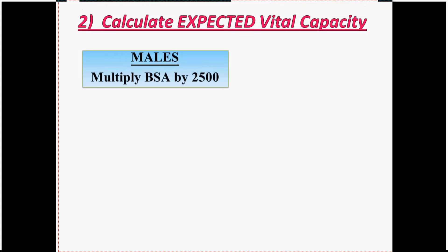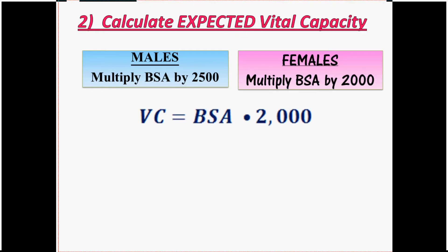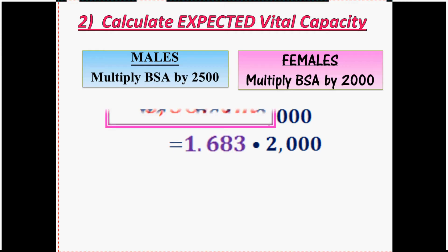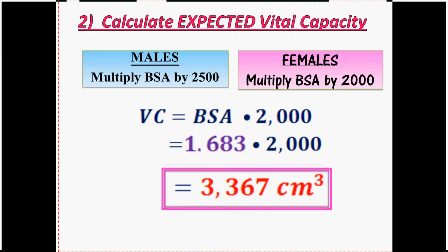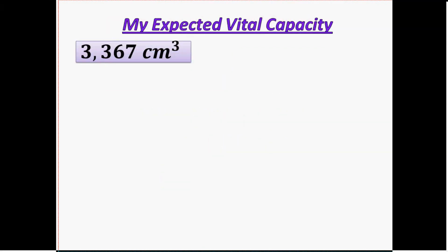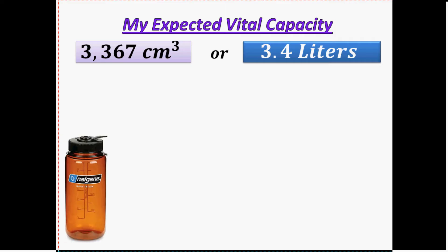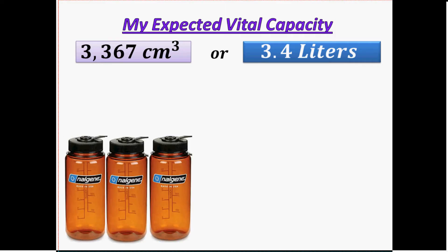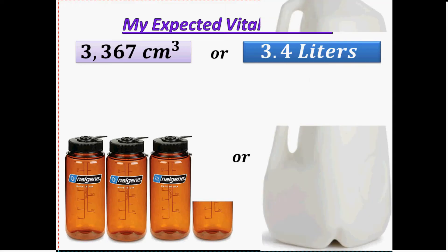For males, they have to multiply their BSA by 2,500. For females, they multiply their BSA by 2,000. So I'm going to take my BSA, multiply it by 2,000, and now I get 3,367 cubic centimeters. What that roughly equates to is 3.4 liters, which would be around 3.4 Nalgene bottles, or 3 quarters of a gallon.